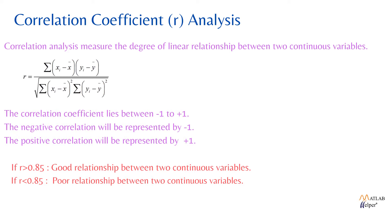Correlation analysis measures the degree of linear relationship between two continuous variables. The formula uses r as the correlation coefficient, xi as observations from the x variable, x-bar as the mean of the x variable values, yi as observations from the y variable, and y-bar as the mean of the y variable values. The value of the correlation coefficient lies between minus 1 and plus 1. Negative correlation is represented by minus 1 and positive correlation by plus 1. If the value is greater than 0.85, there is a good relationship between variables. If less than 0.85, it is a poor relationship. If the value is 0, there is no relationship between the two variables.